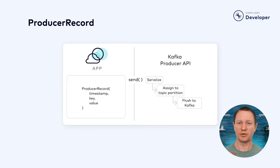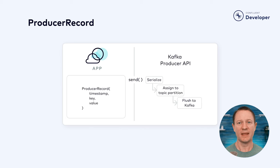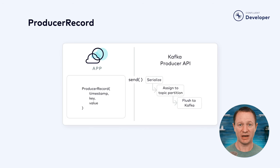After you've created the producer record, you pass it to the send method of Kafka producer. It is serialized and the partition on which it will land is determined. As mentioned earlier, if you provided a key, all of the messages will be sent to the same partition. This is so that when you read the messages back using a consumer, you have the guarantee that they are in order. If you didn't provide a key, each message will be divided up in batches among all of your partitions.